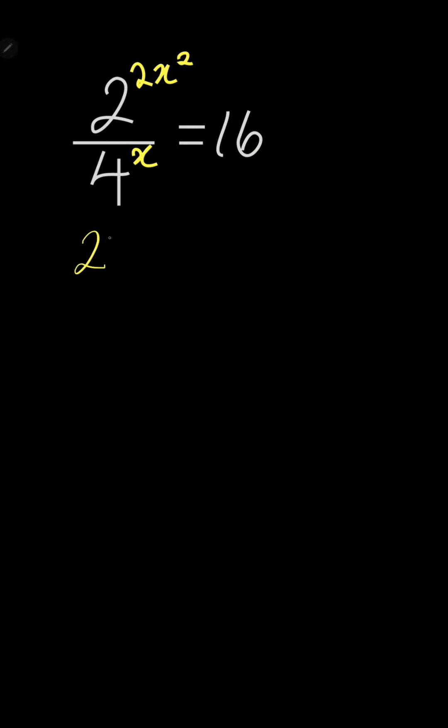So this is 2 to the power of 2x squared divided by 4 to the power x, which is 2 to the power 2x, because 4 is 2 squared. And 16 can be written as 2 to the power of 4.